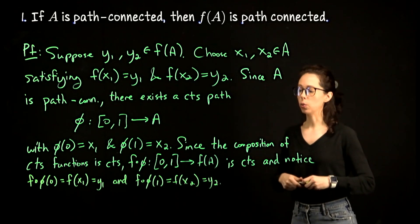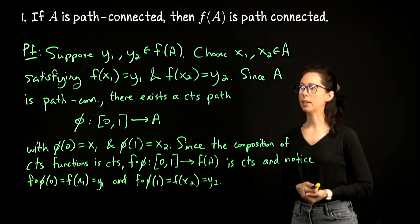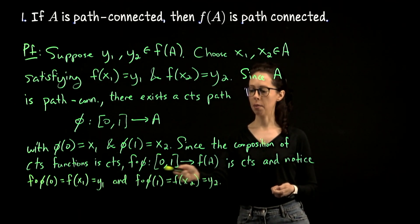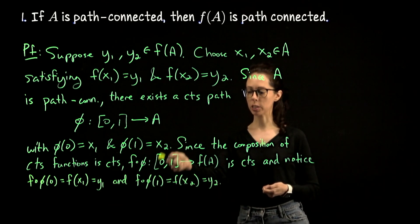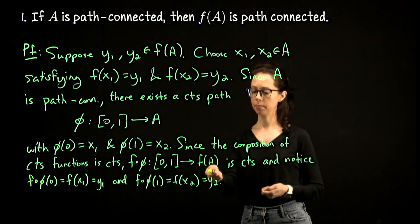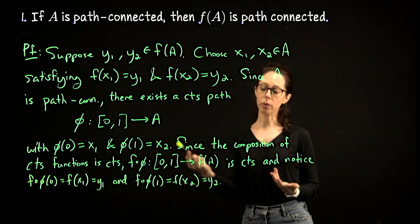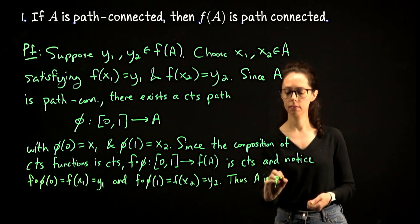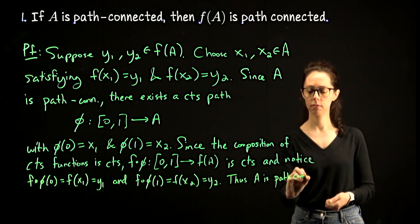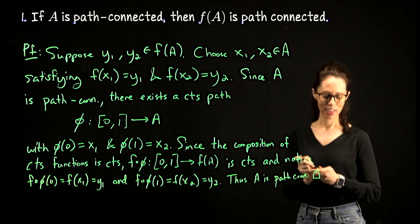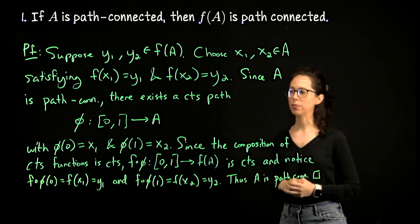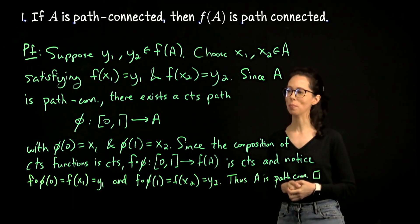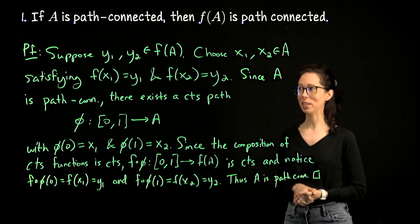That's exactly what we need in order to justify that f of A is a path connected set. We have a continuous map from this unit parameter space to f of A—it lives in f of A—which connects y1 and y2. So thus, f of A is path connected. It's a little easier than the proof that a continuous function on a compact set has compact image, but it really follows the same thought process. So it might be fun to compare this to the two proofs that we did already.